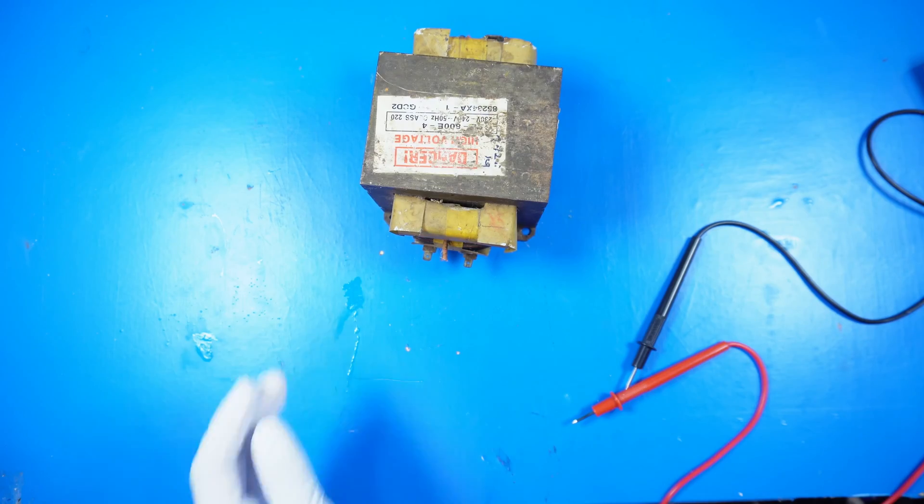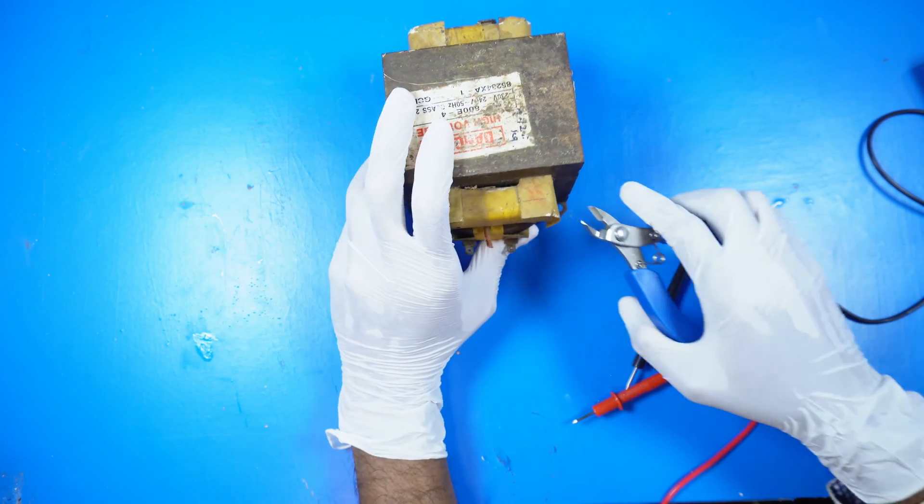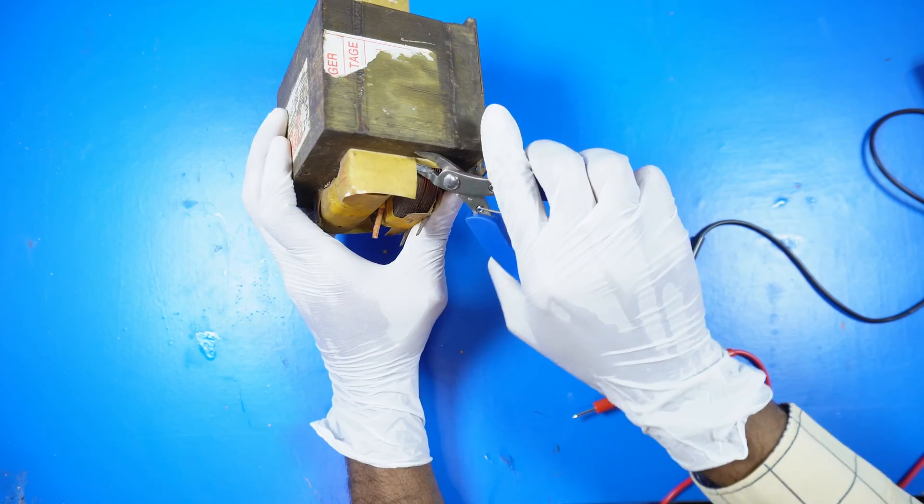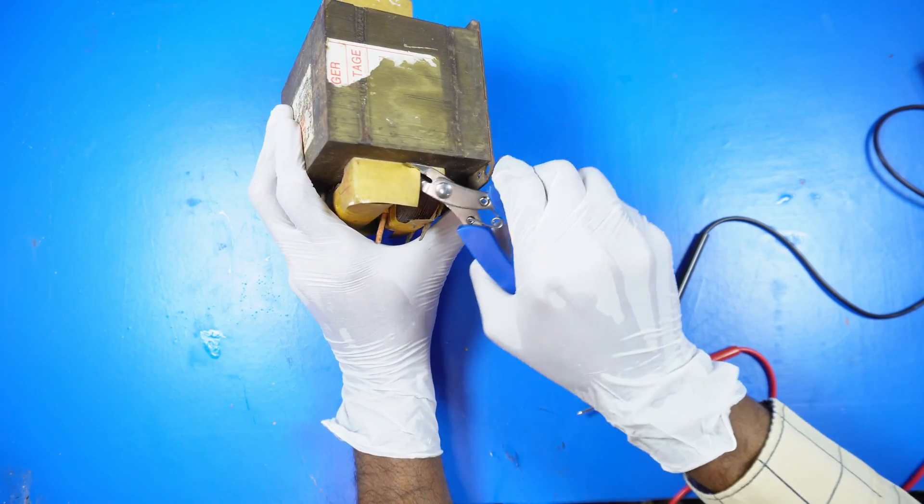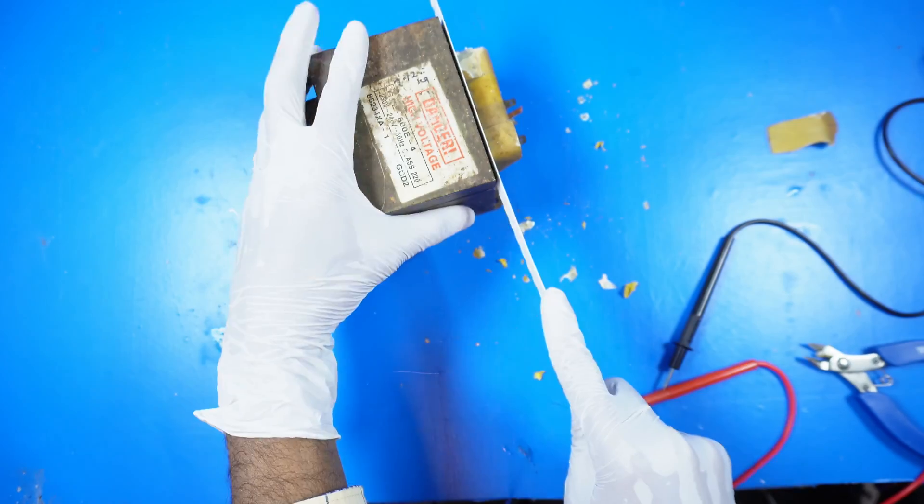Next, I carefully cut and remove the secondary winding without damaging the primary winding. It's crucial to avoid damaging the primary coil, as that would render the transformer useless.